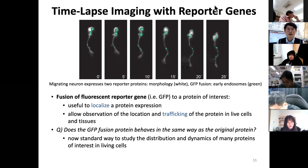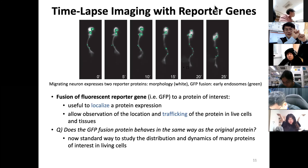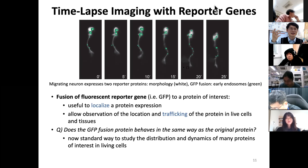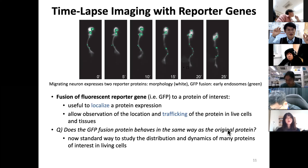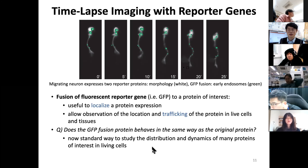Whenever you have a reporter gene, you have to ask: is what you're observing the fusion protein, not the actual protein — you are looking at the surrogate green fluorescence marker indirectly. You must ask whether the fusion protein behaves the same way as the original protein. GFP itself is not a very big protein relative to the protein of interest, but if the protein is very tiny and you attach GFP — which is large — you have to ask if what you are observing truly reflects that tiny protein's behavior. Over time, this has become a standard approach to study distribution and dynamics of proteins in living cells.